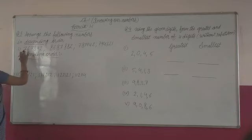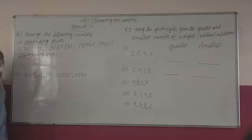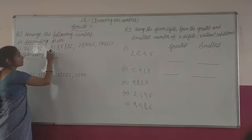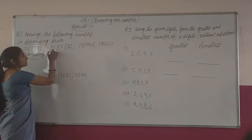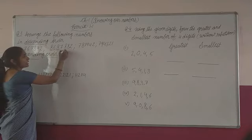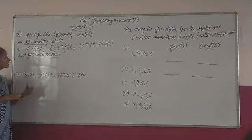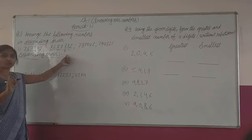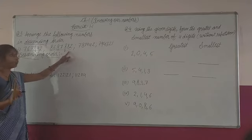In this number, how many digits? One, two, three, four, five, six — the number of digits is six. In this other number, one, two, three, four, five, six, seven — the number of digits here is seven, which is more. Here seven, here six. So between these two numbers, which one do we write first? This one, because it has more digits.